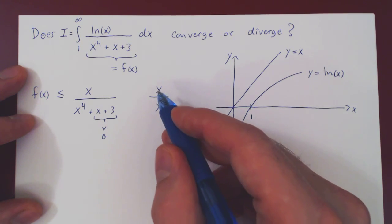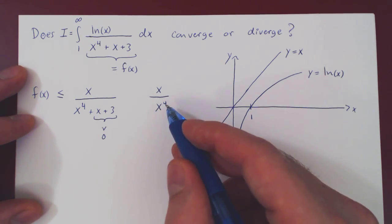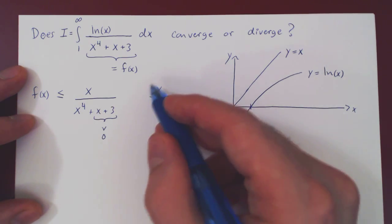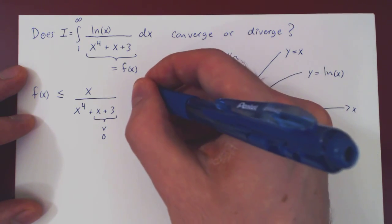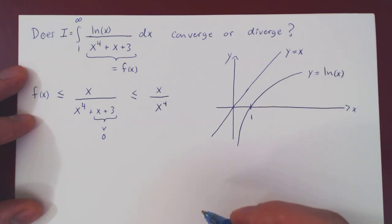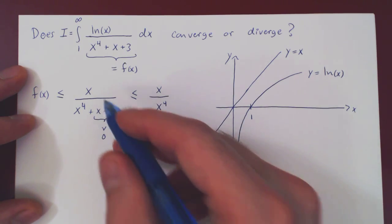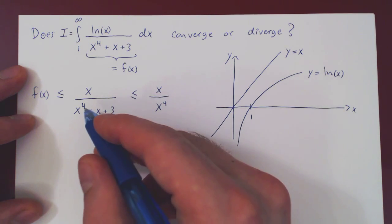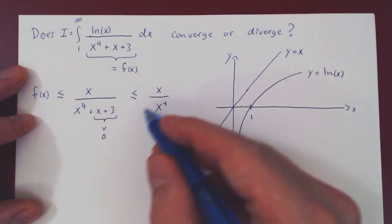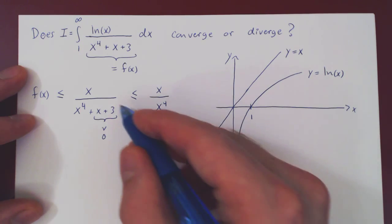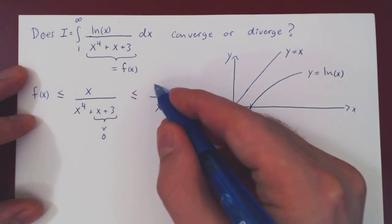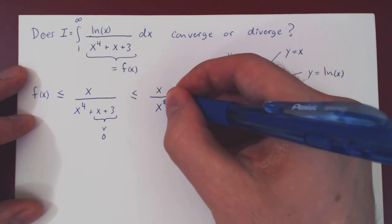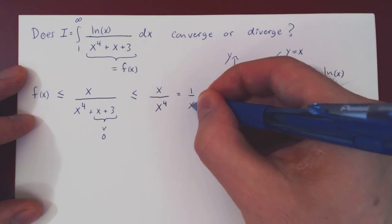But if you keep the numerator the same, and you divide by something smaller than what you initially had, the fraction becomes bigger. And you can easily verify this by cross multiplying. Multiply by x to the 4, and by x to the 4 plus x plus 3. And you have x to the 4 is less than x to the 4 plus x plus 3. And this of course simplifies quite nicely as simply 1 over x cubed.